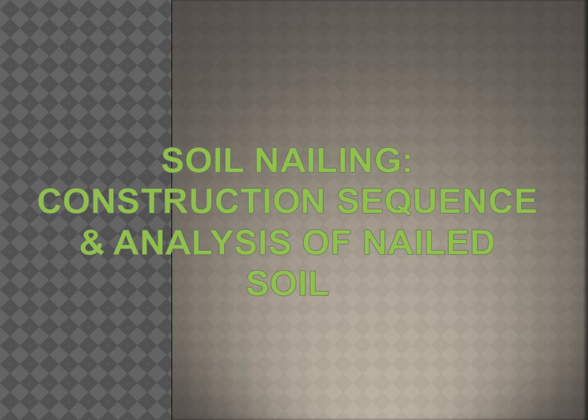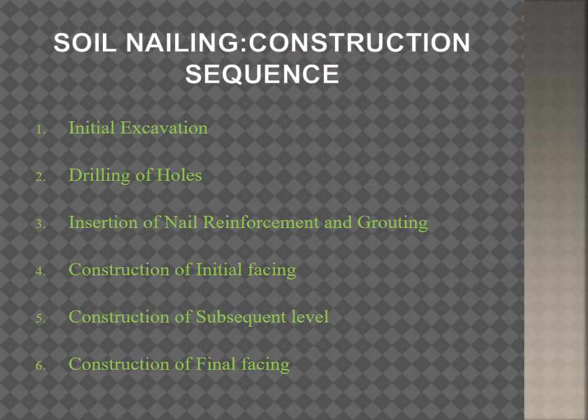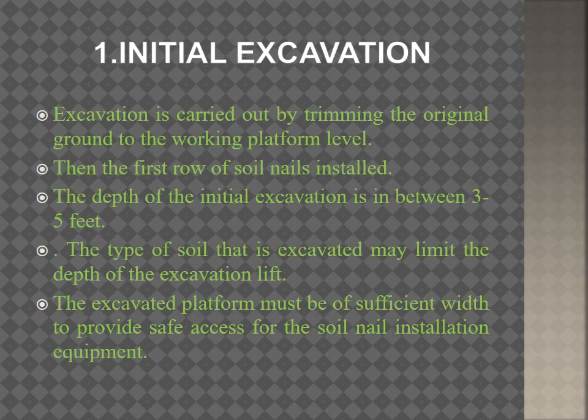The construction sequence of soil nailing is a six-step process. The steps are: first, initial excavation; second, drilling of holes; third, insertion of nail, reinforcement, and grouting; fourth, construction of initial facing; fifth, construction of subsequent levels; and sixth, construction of final facing.